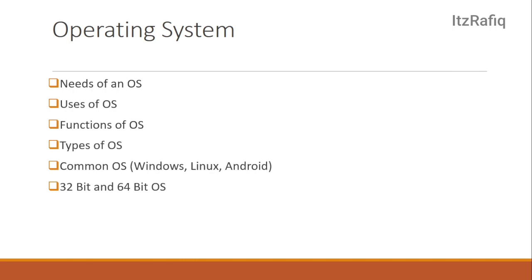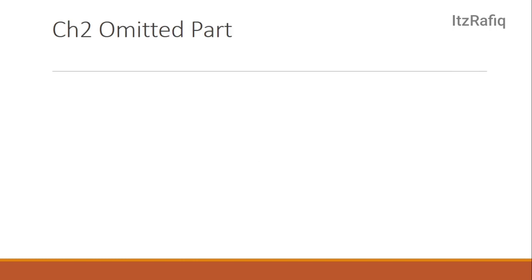These things you can study for your examination from Chapter 2. Only one topic is removed from Chapter 2 — OS directory structure, which is on page number 35 — that topic is not required for the half-yearly examination. Also see the MCQ, fill in the blanks, and true/false questions from your book.